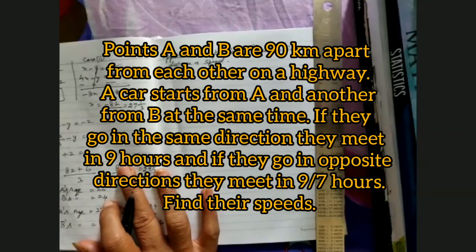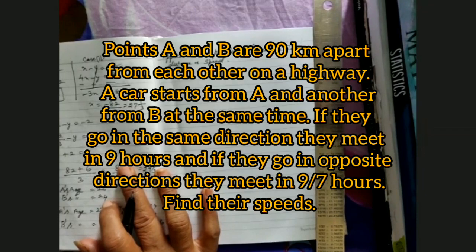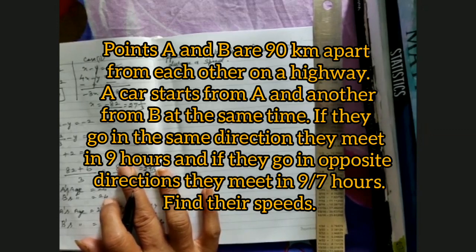Points A and B are 90 km apart from each other on a highway. A car starts from A, another from B at the same time. If they go in the same direction, they meet in 9 hours. If they go in the opposite direction, they meet in 9/7 hours.